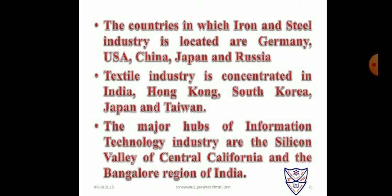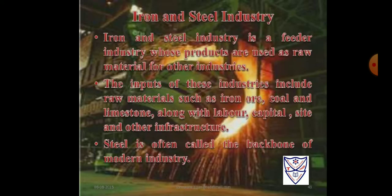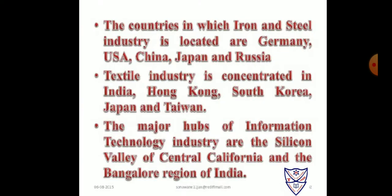Industries that are still emerging are sometimes called emerging industries — hospitality, wellness, knowledge, and IT are examples. The countries where iron and steel industries are located include Germany, US, China, Japan, and Russia. Textile industry is concentrated in India, Hong Kong, South Korea, Japan, and Taiwan. The major hubs of the information technology industry are Silicon Valley in Central California and the Bangalore region of India.